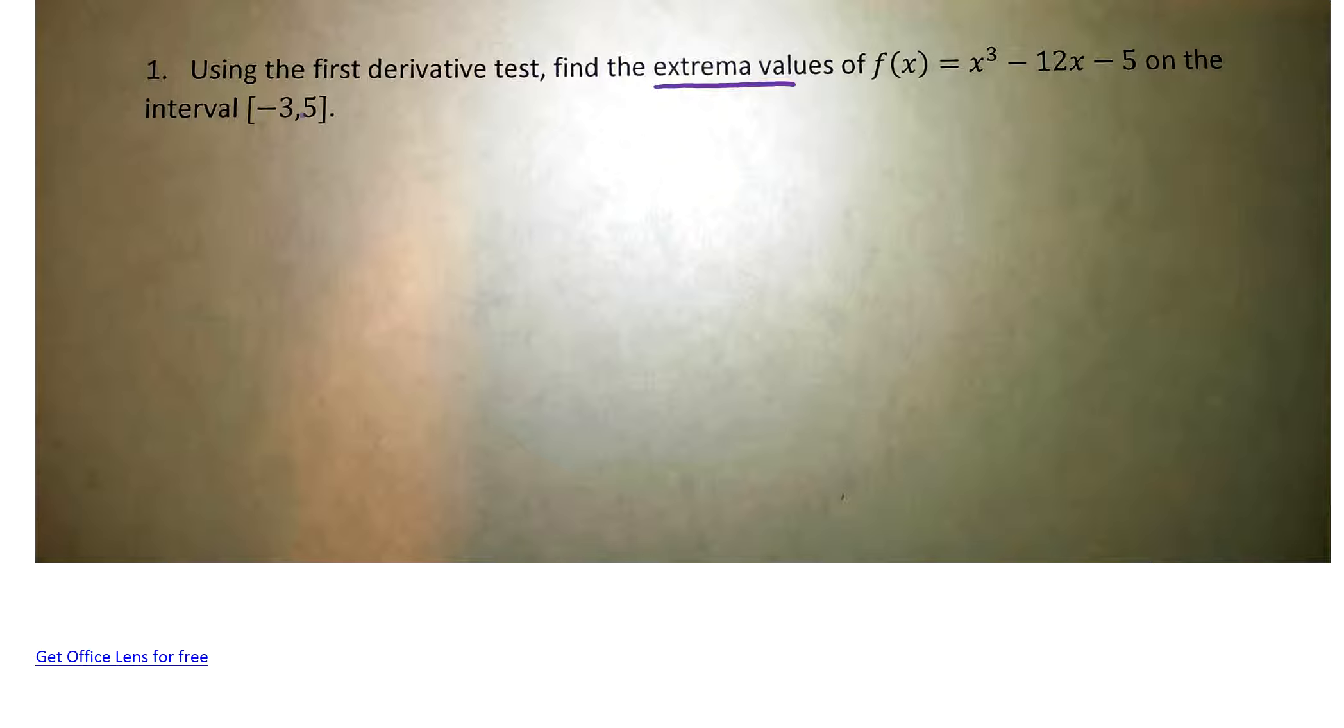So, what do we do? Extreme values are going to come in one of three things. On the interval from negative three to five, they're going to come at either the endpoints or places where the derivative is zero, or if it's not a nice graph, they might come at a place where the derivative is undefined. So that's why we want to find where's the derivative zero or undefined, and then we also want to check our endpoints. Those are the only places where we're going to have maxes or minimums. These are our possible extreme values.